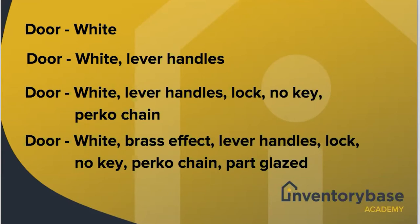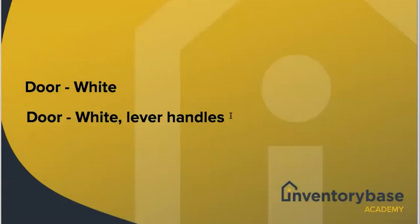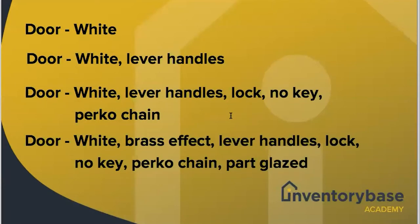With that description showing no issues, everything is fine — and if there were, I would note that in the condition. So if that door comes back missing handles, lock, damaged or cracked glazing, or a key is there when it wasn't before, I can use that information at checkout. But I can't do that if I don't have the information in the first instance. The message: you need the detail so the reader can understand it. Going from 'white' to 'white lever handles' to 'brass effect, lever handles, lock, no key, perco chain, part glazed' gives a lot more information.